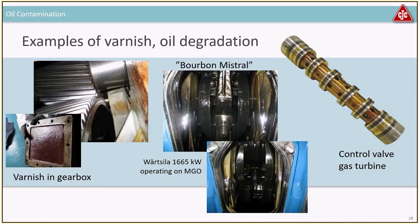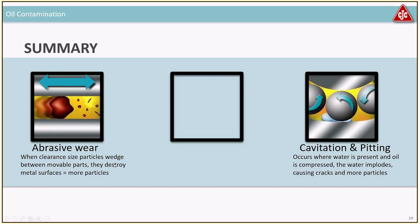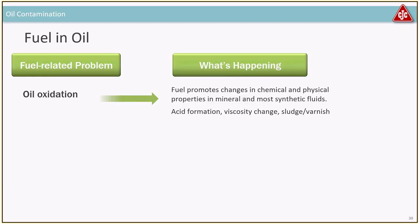Here are photos of varnish on a gearbox, an engine, and a valve — you can see the yellow soot in the engine that has been cleaned up. You have a really bad combination of three things in most systems: abrasive wear from particles destroying surfaces, water causing cavitation and pitting, and water-varnish issues. These three things are big problems for most machines.